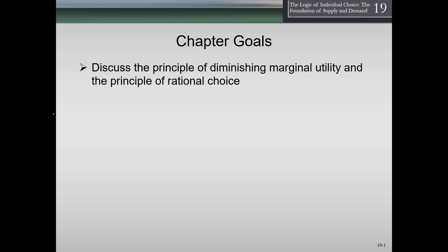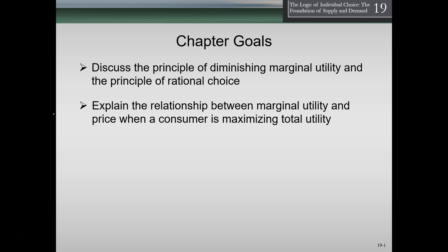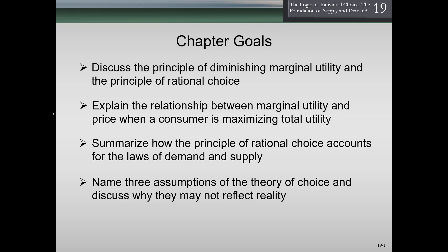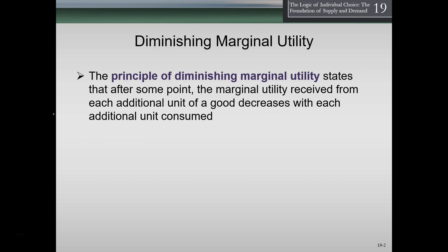In this lecture we're going to continue talking about the logic of individual choice, the foundation of supply and demand, chapter 19. Our objectives are to discuss the principle of diminishing marginal utility and the principle of rational choice, explain the relationship between marginal utility and price when a consumer is maximizing total utility, summarize how the principle of rational choice accounts for the laws of demand and supply, and name three assumptions of the theory of choice and discuss why they may not reflect reality.